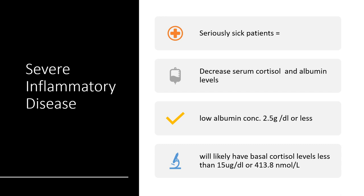Severe inflammatory disease will occur in seriously sick patients dealing with decreased free cortisol and low albumin levels. The albumin level could be as low as 2.5 grams per dL or less, and basal cortisol level will be less than 15 micrograms per dL, or 413.8 nanomoles per liter. With that, I've come to the end of this presentation. The next presentation will be part 3 of 7. Please follow all parts 1 to 7, and by the time we reach part 7, you will be comfortable with any topic regarding Addison's Disease or Adrenal Insufficiency. Thanks for listening — please remember to share and subscribe.